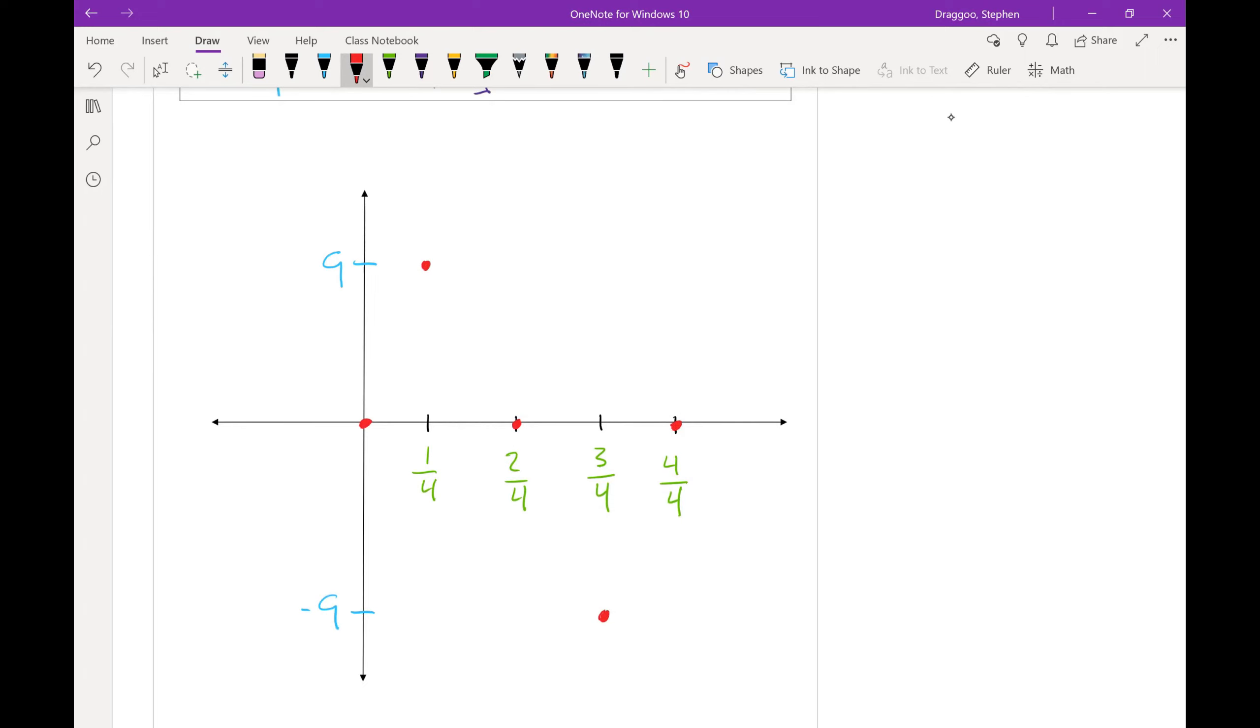Lastly, I just need to connect these dots. And there I have my graph. Lastly, I should label my 5 key points.